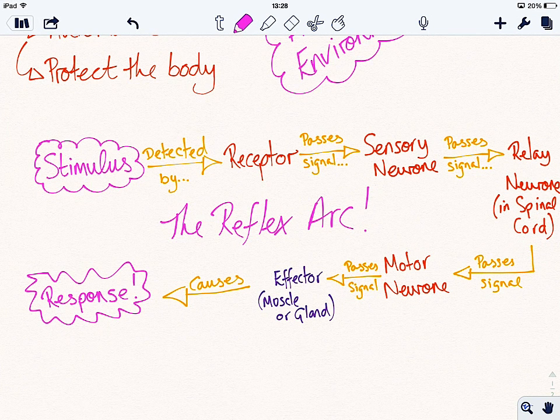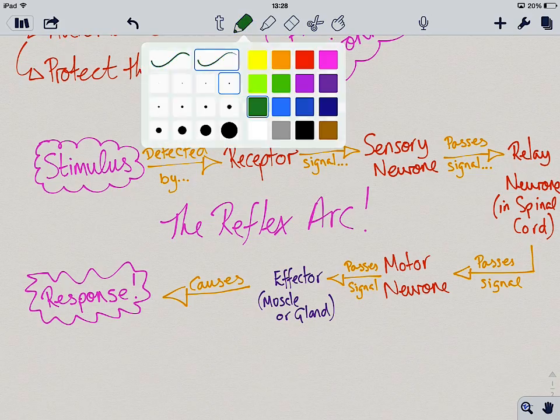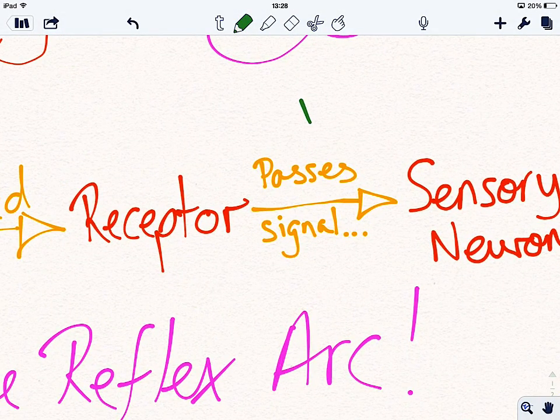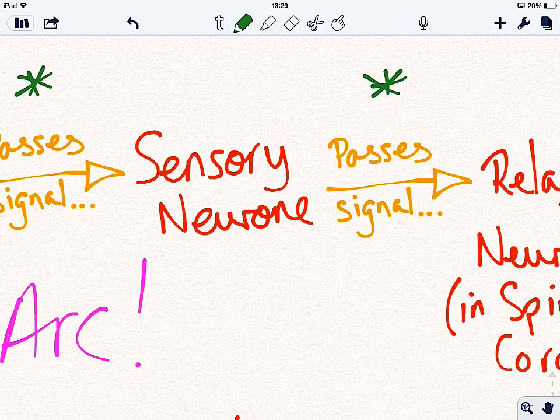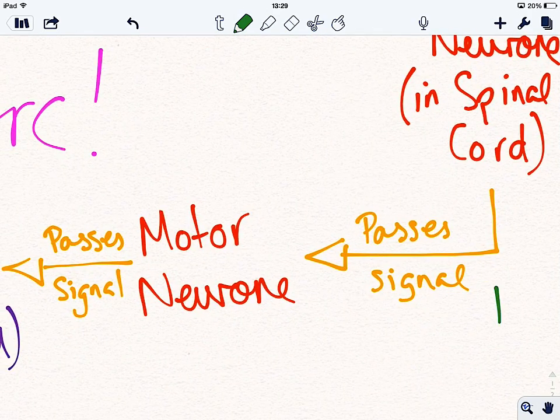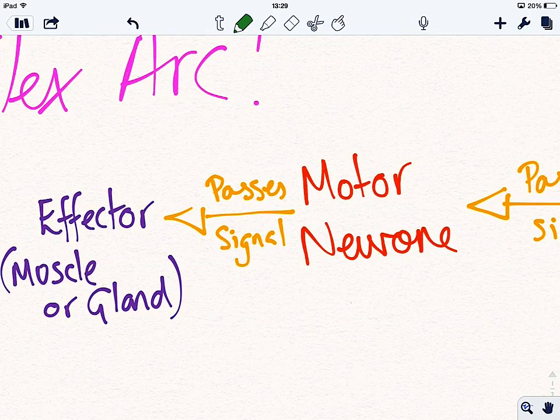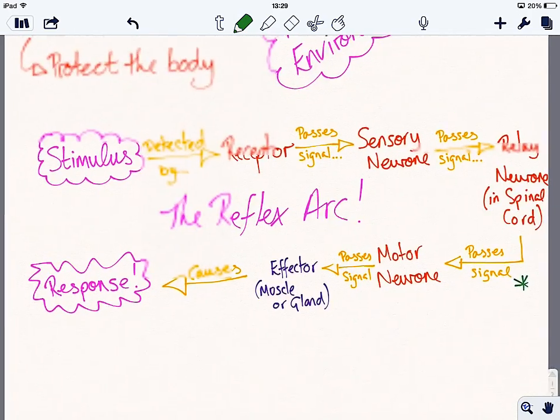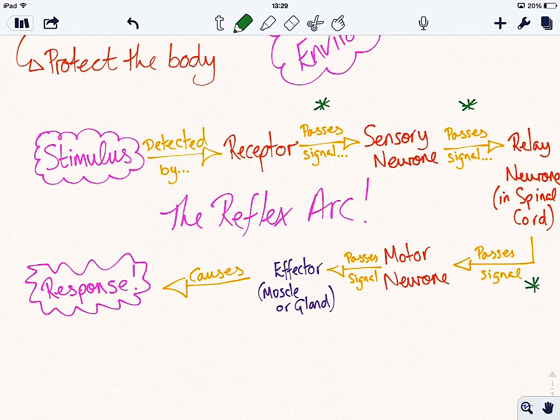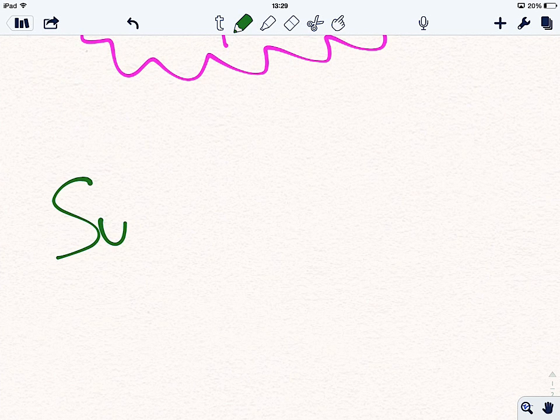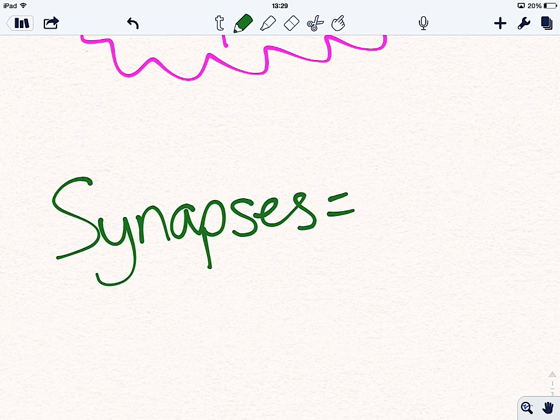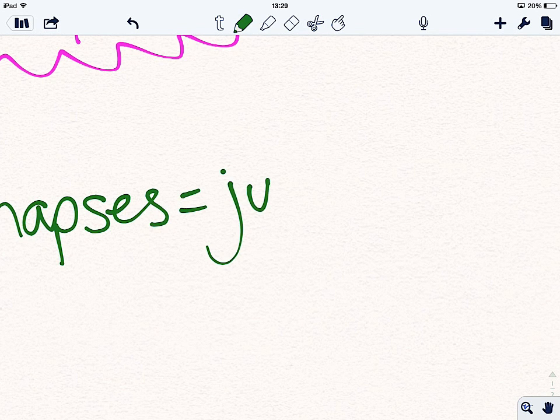So in between, at each of these points, let's put them on in green, at each of these points where neurons are joining together, and to a lesser extent over here, but I won't leave that one on, where those green asterisks are, there are these things called synapses. And these are gaps between nerve cells, or junctions between neurons.